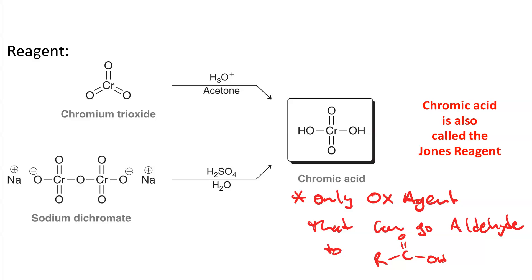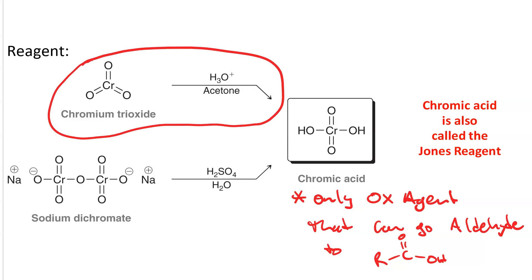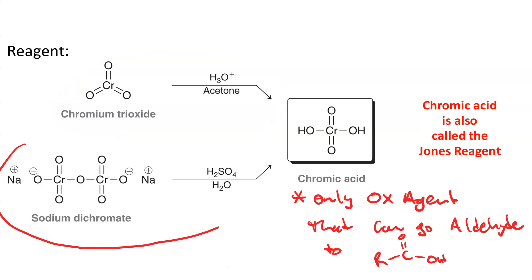Starting with a primary alcohol, any oxidizing agent will get you to an aldehyde, but only chromic acid will take you all the way to a carboxylic acid. People don't just have chromic acid sitting on their shelves — you have to generate it in situ. There are two ways to do that: one is chromium trioxide with hydronium and acetone (Jones reagent), and the other is sodium dichromate, sulfuric acid, and water, which also generates chromic acid.